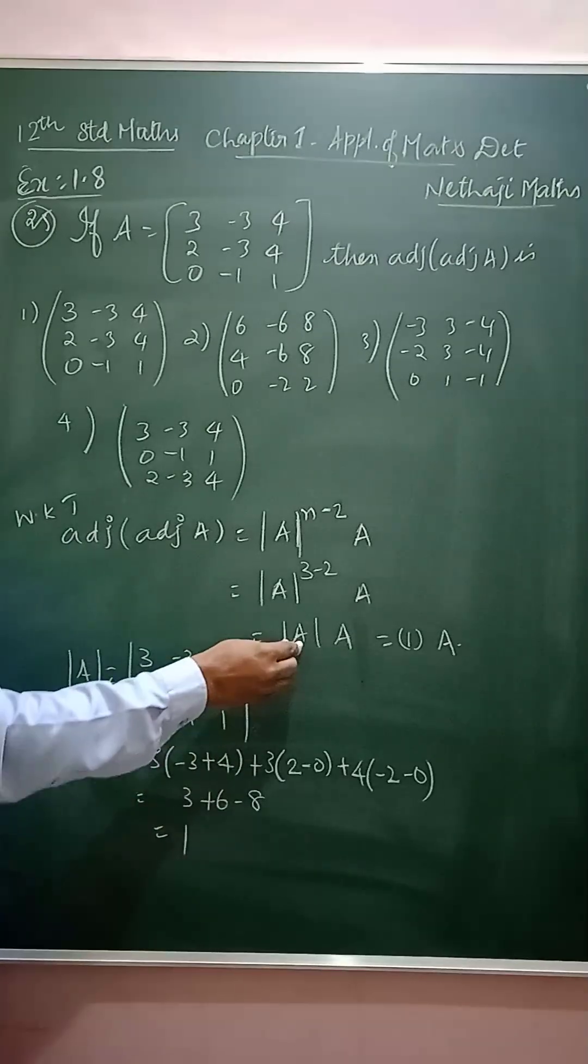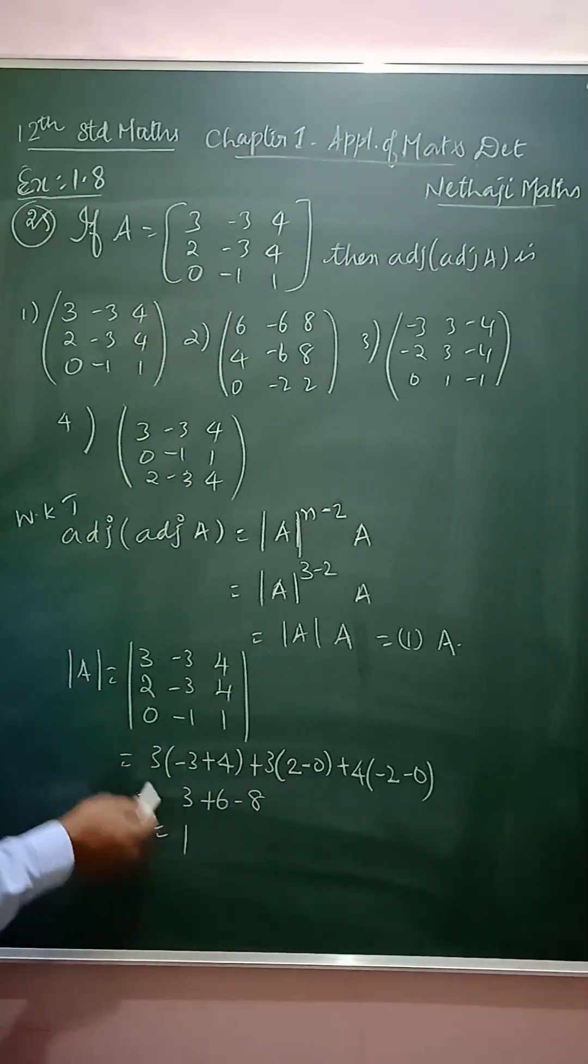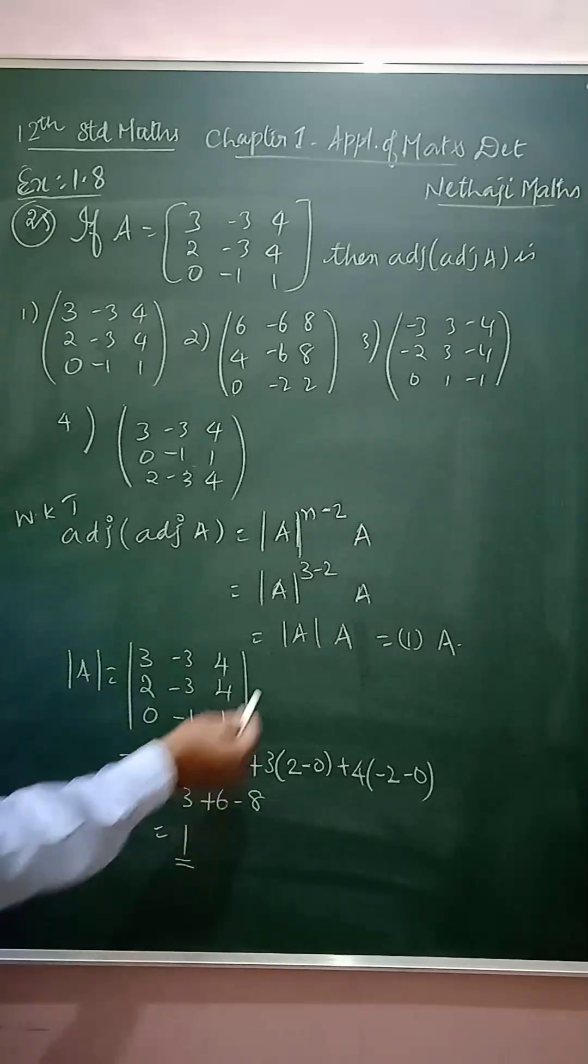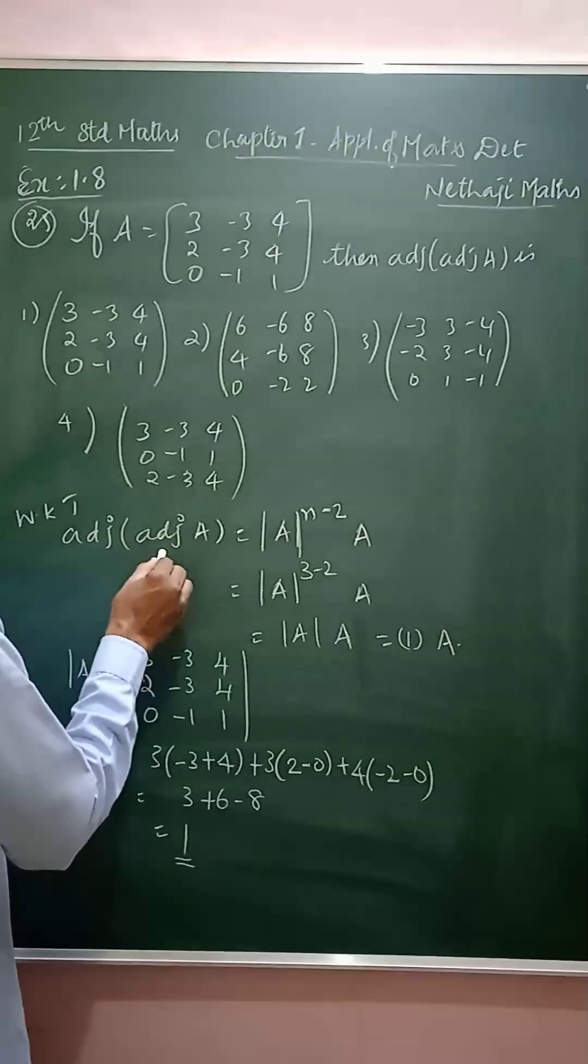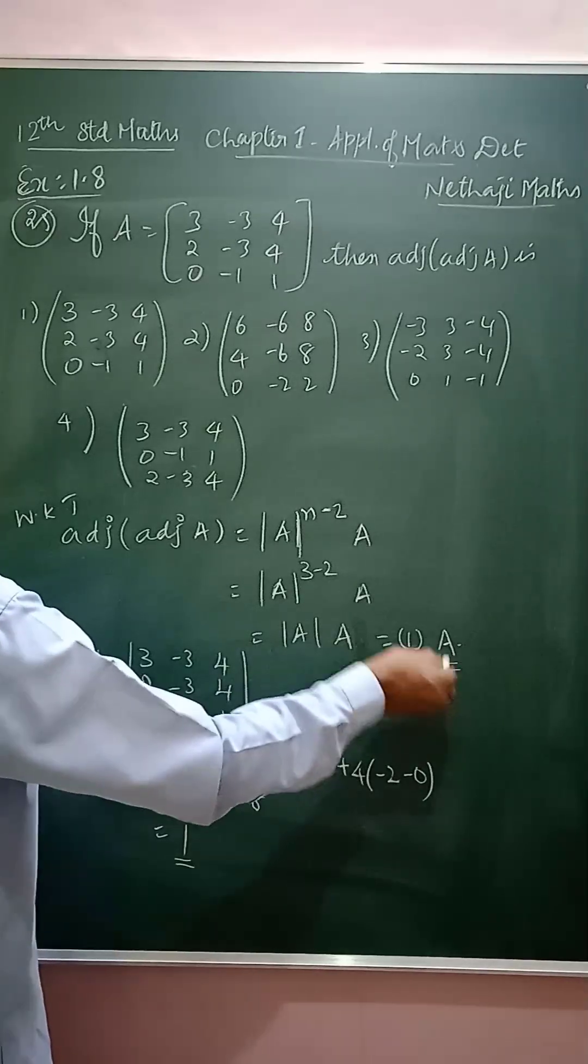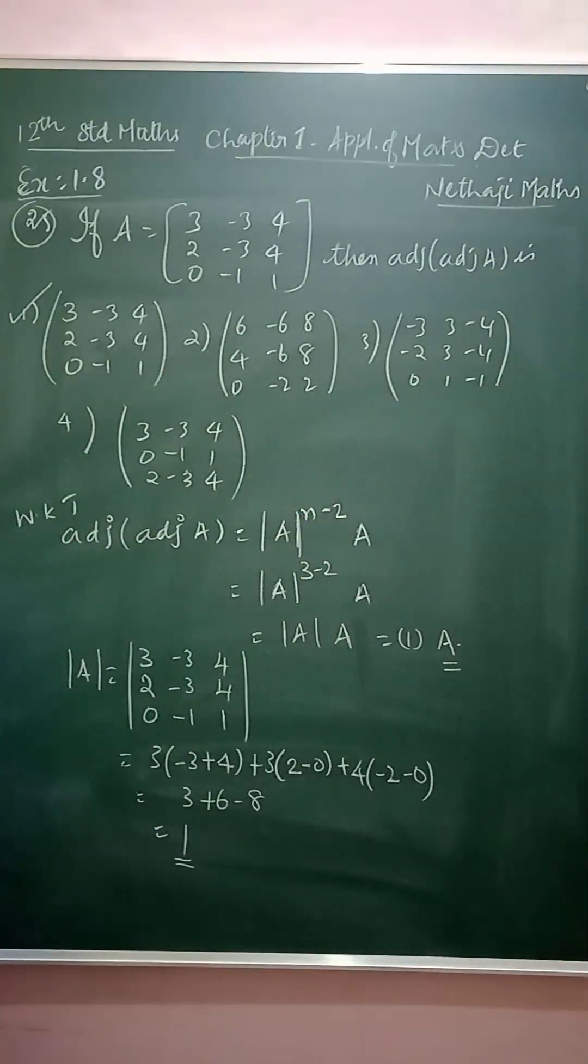So for that we have to find the determinant value. I am going to find the determinant value and get the answer as 1. So if you substitute here, 1 times A matrix, so adjoint of adjoint of A equals the A matrix. So the answer is option 1. That's all, thank you.